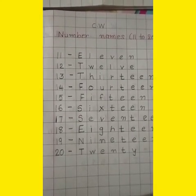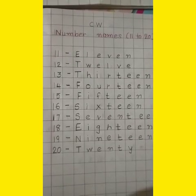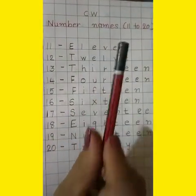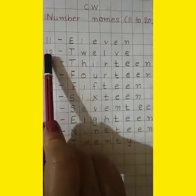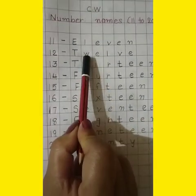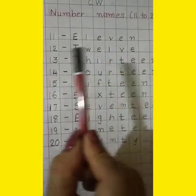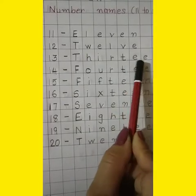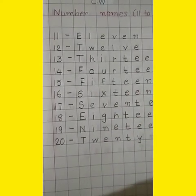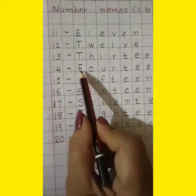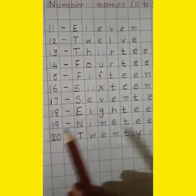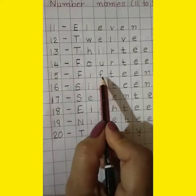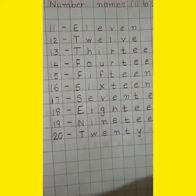We have revised one more time. Number names 11 to 20. 11 — E-L-E-V-E-N. 12 — T-W-E-L-V-E. 13 — T-H-I-R-T-E-E-N. 14 — F-O-U-R-T-E-E-N. 15 — F-I-F-T-E-E-N.